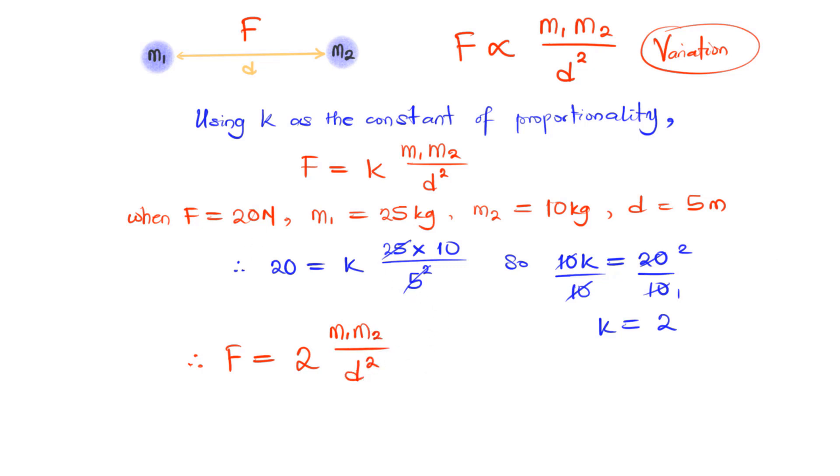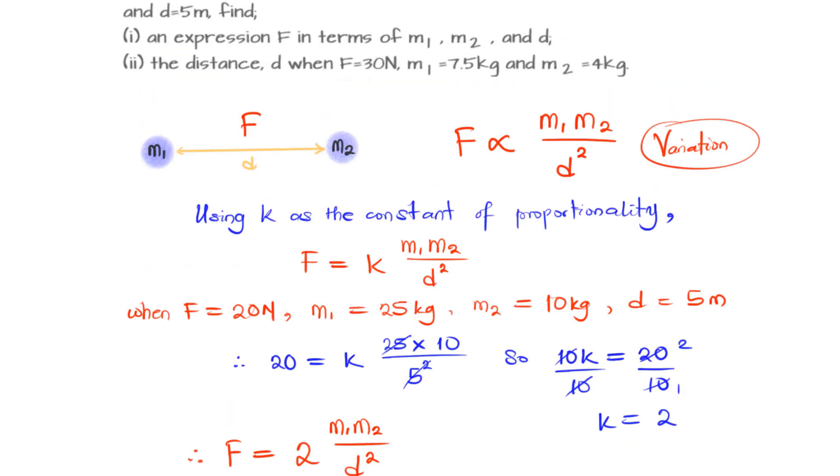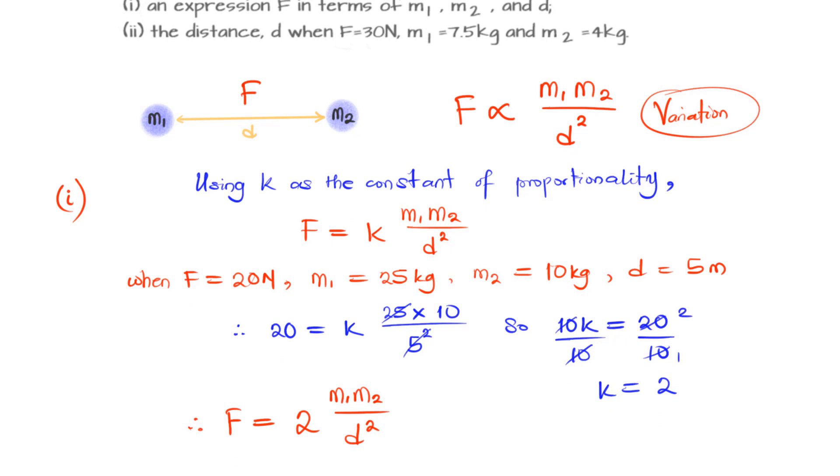That is question 1. In the second case, we are asked to find the distance when the force is 30, M1 is 7.5, M2 is 4 kg. We can go ahead to put in those values now.